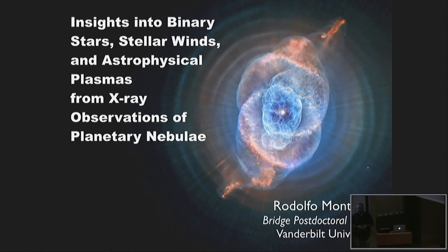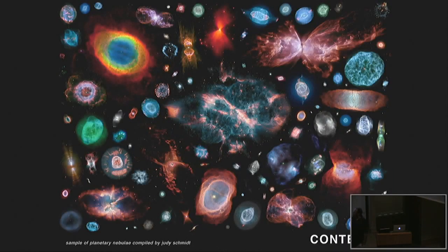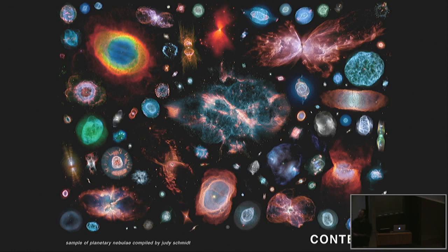These are planetary nebulae - really beautiful, amazing objects, not to scale but an assemblage of nebulae. You see morphologies of different shapes - some narrow-waisted morphologies, some bipolar lobes. These are the questions we've been trying to figure out for the last couple of decades: how do you get this variety of shapes in planetary nebulae? I'm going to touch a little bit on how X-rays might have some insight into that.